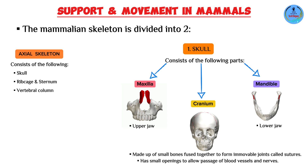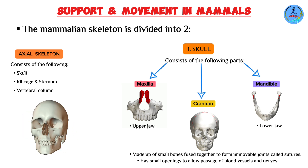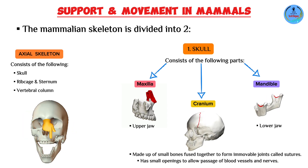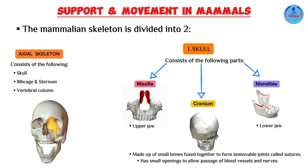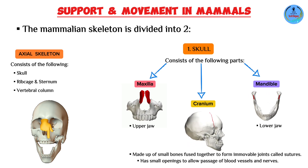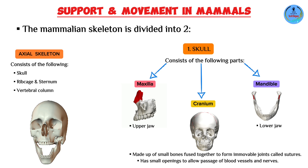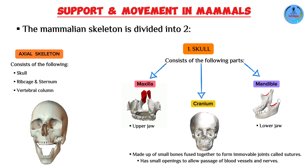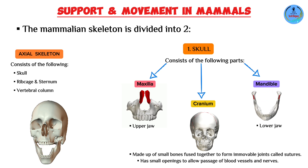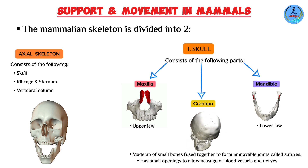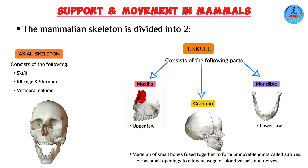When it comes to the maxilla (upper jaw), it is fused with the cranium, forming a permanent joint — that is why we cannot move our upper jaw; it is fixed in position. The mandible (lower jaw), however, articulates with the cranium to form a movable joint, allowing movement especially up and down. The lower jaw is the only movable bone in the skull.